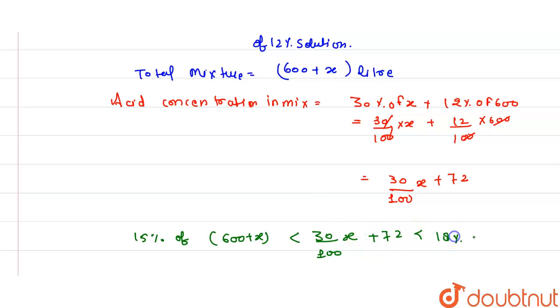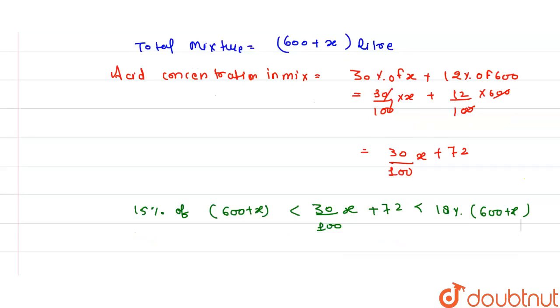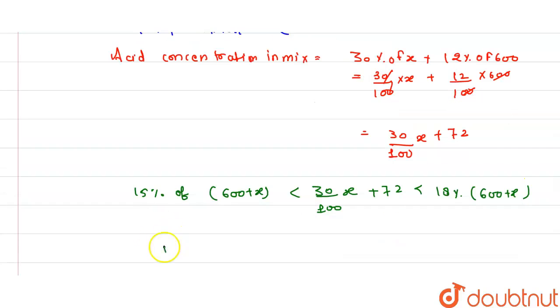18% of 600 plus x. Now solve the value. Open the brackets. The next step is 15/100 times (600 plus x). 100 cancels, so this is 30x, and multiply with